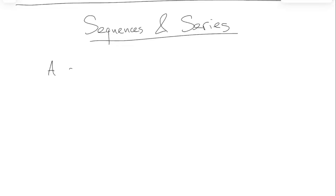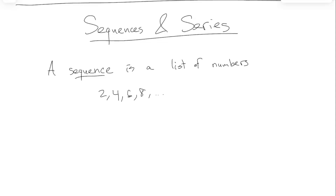Sequences and series is what we'll be talking about for the remainder of the semester. For the next 20 minutes or so, it will be very basic stuff that probably everybody is familiar with, just to get our terminology straight. A sequence is a list of numbers — something like 2, 4, 6, 8, etc., or 1, 2, 4, 8, 16, etc. The word series is what you call it when you try to add together all the terms — that's called a series. When they're just numbers one after another, that is a sequence.